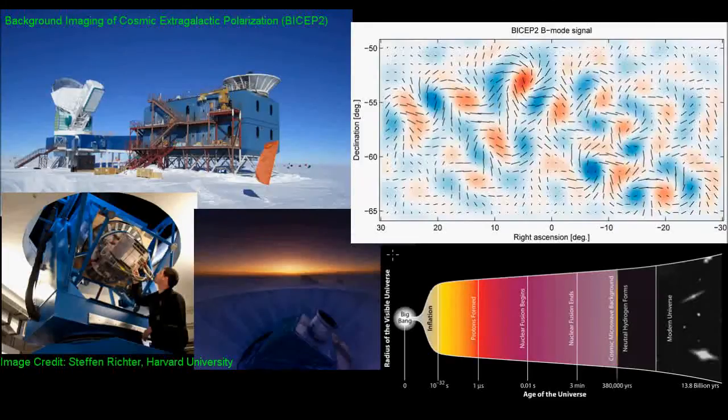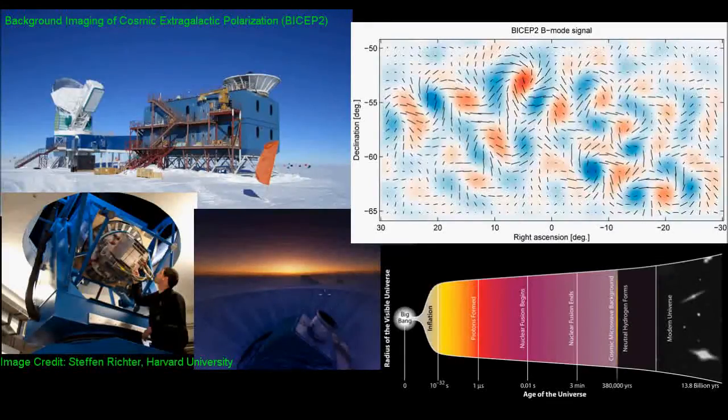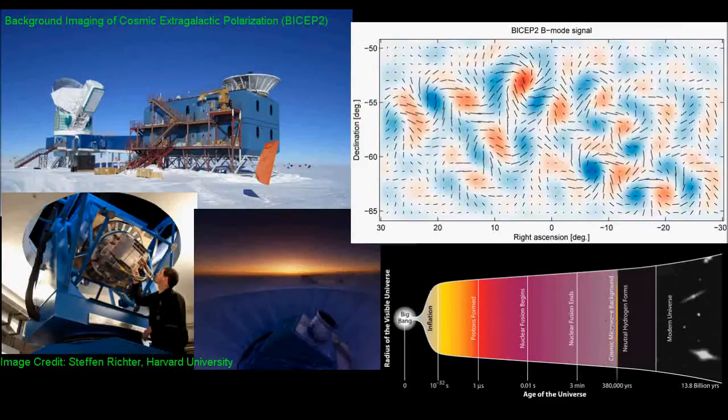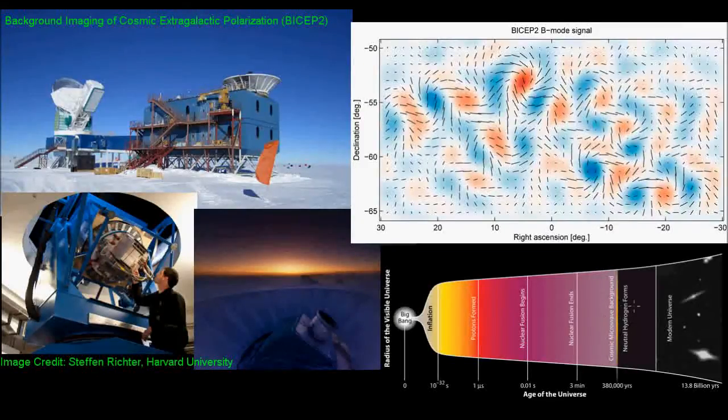So what exactly was done for the BICEP2 experiment? Well, the BICEP2 team used a state-of-the-art instrument to measure the polarization of light from the cosmic microwave background. So that sentence has a lot going on, so let's talk about each bit separately.